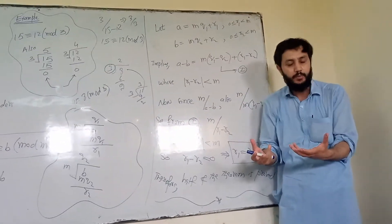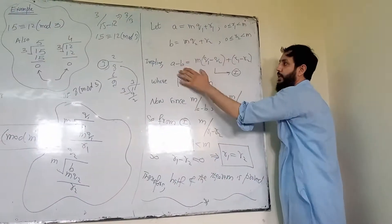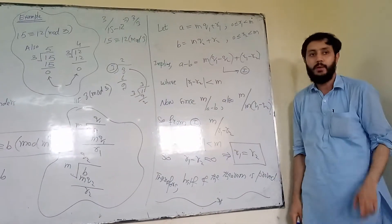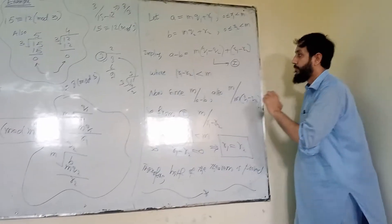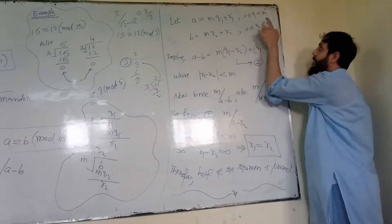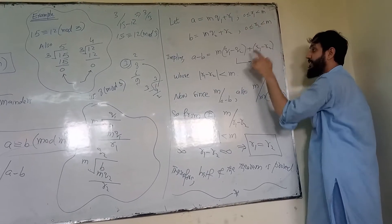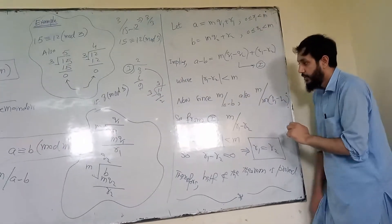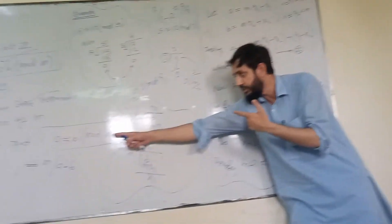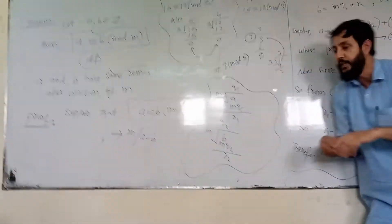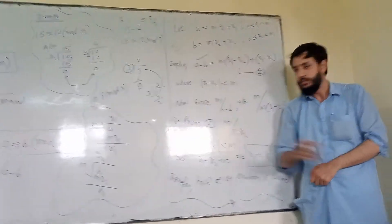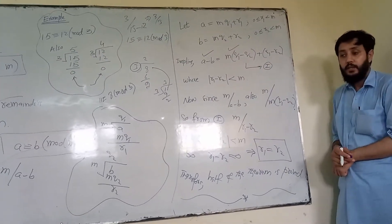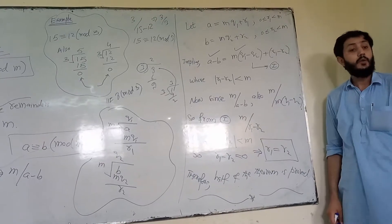The remainder is always less than the divisor. Now subtract the two division equations. When you subtract them, A minus B gives us M times (Q1 minus Q2) plus (R1 minus R2). Our target is to make the remainders the same. We know that if R1 is less than M and R2 is less than M, then their difference is also less than M in absolute value. Since we supposed M divides A minus B, and M also divides M times (Q1 minus Q2), by the linear combination property, M must also divide R1 minus R2.